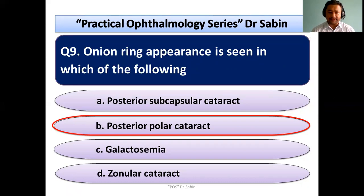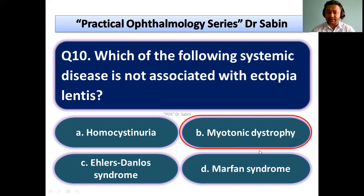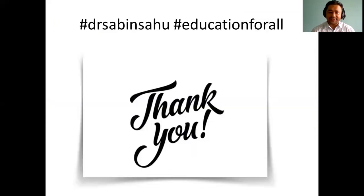Galactosemia shows oil droplet reflex. Which of the following systemic diseases is not associated with ectopia lentis? Three of the options are associated and one is not. Option A: homocystinuria — subluxation in inferior nasal direction. Option B: Marfan syndrome — subluxation in superior temporal direction. Option C: Ehlers-Danlos syndrome — subluxation will occur. But in myotonic dystrophy, subluxation will not occur. So the answer is B.